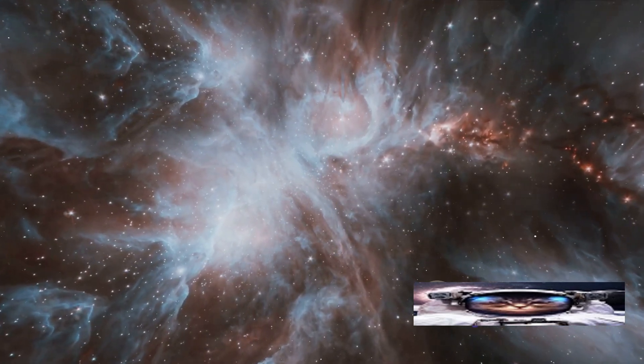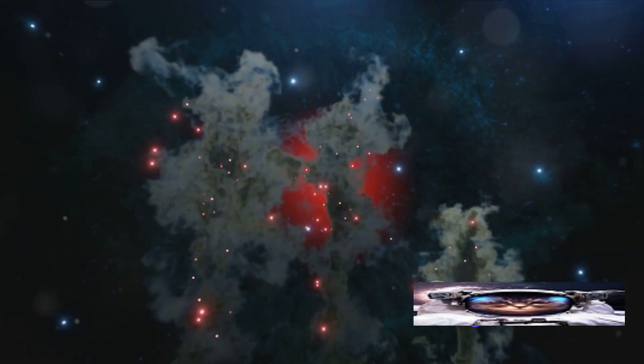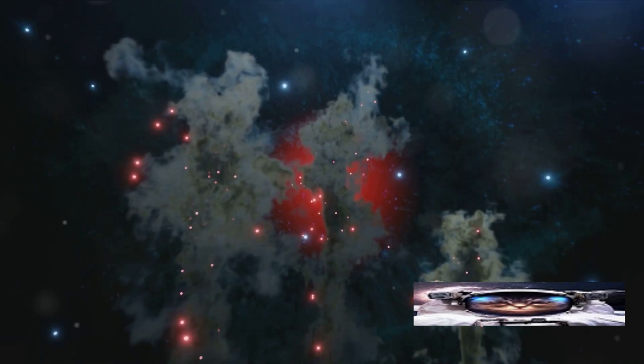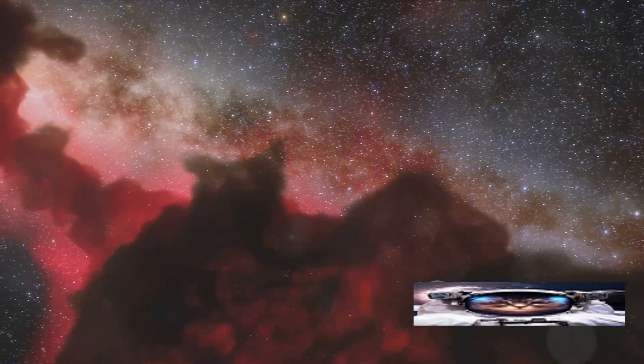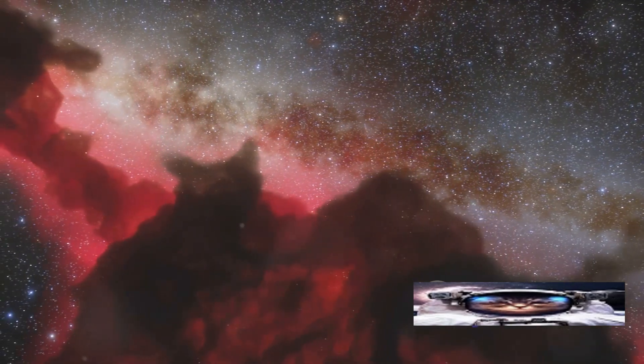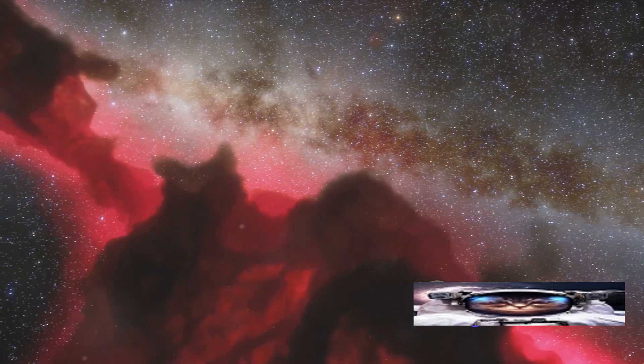Through the Hubble's lens, nebulae aren't just abstract blurs of light and color. They become tangible, intricate structures teeming with activity. Each image tells a story, whether it's of a star being born from a dense cloud of gas and dust, or the explosive death of a star in a supernova.